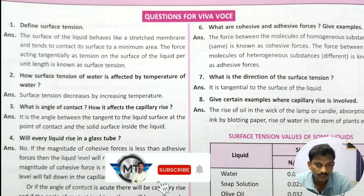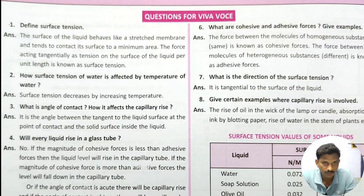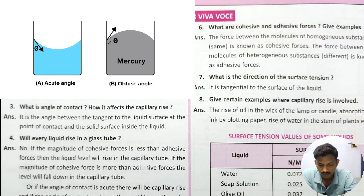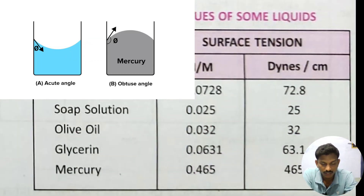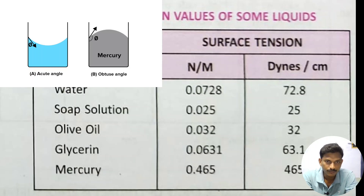The value of surface tension differs for different types of liquids. Mercury is 0.465 — that is very important. Water is 0.07 — that is very important. We will see the difference between mercury and water.